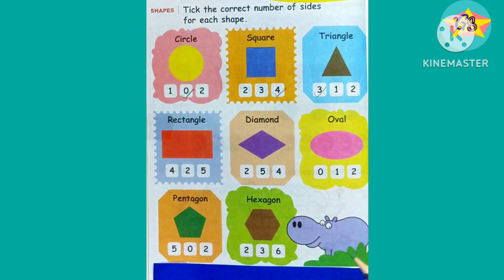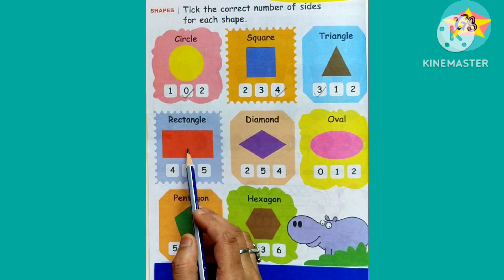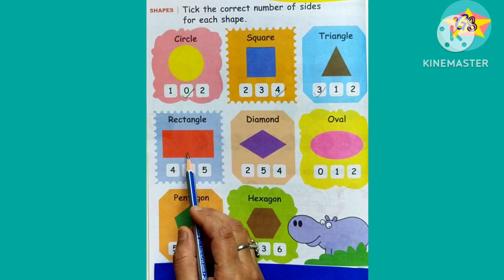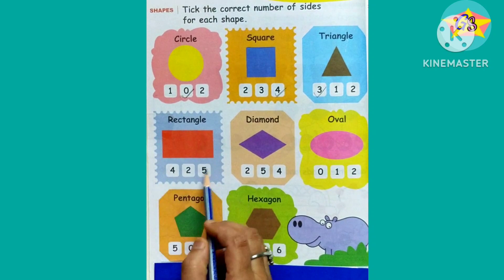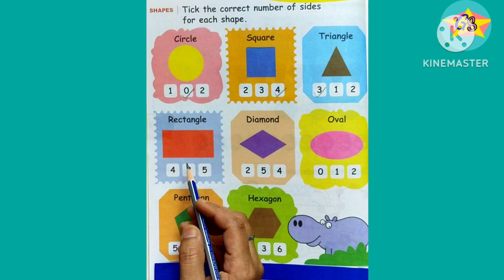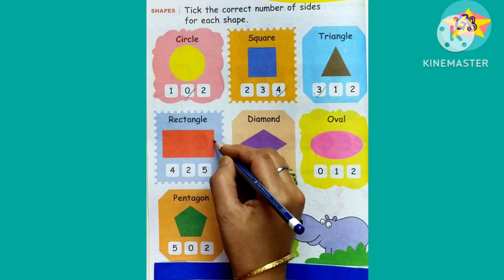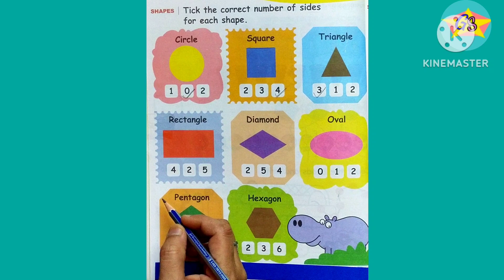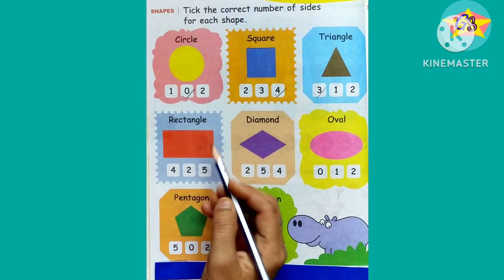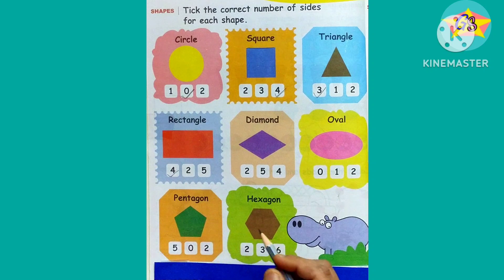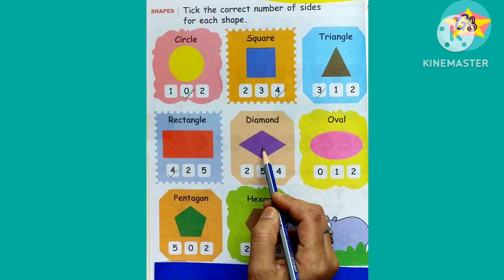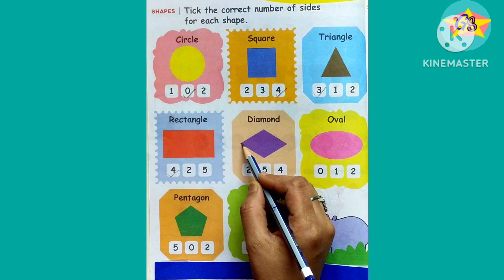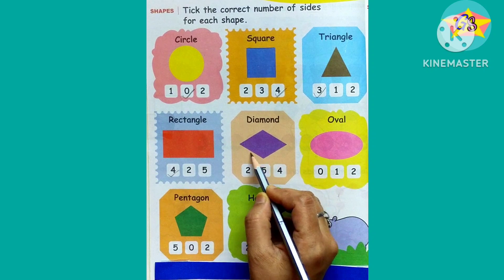The next shape is a rectangle — in Hindi we call it 'aayat.' Let's count the sides of the rectangle: one, two, three, four. There are four sides, so we have to tick on the number four.